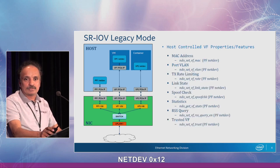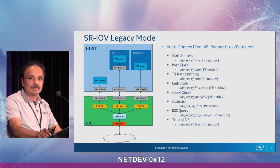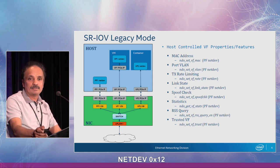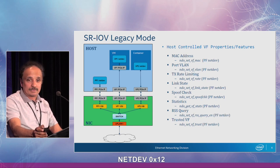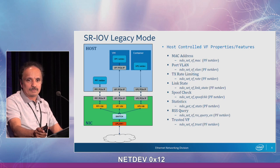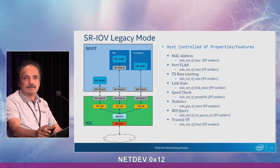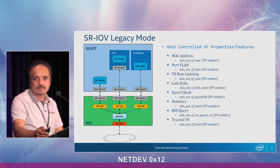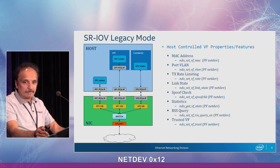The next slide shows the properties and features that can be controlled by the PF via NDO set VF and NDO get VF ops. Currently we are considering these as legacy ops and they are expected to be frozen, so we are not expected to add more of these functions. Using these, we can control the MAC address, port VLAN, transmit rate limiting, link state, spoof checking, get statistics, query RSS information, enable or disable whether the VM can query the RSS information, and also make a VF a privileged one via the trusted function.